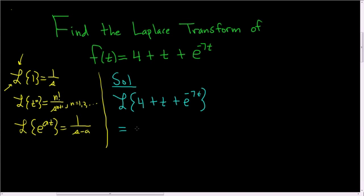And the Laplace transform is linear. So we can write this as 4 times the Laplace of 1. That means we can pull numbers out. We can't pull t's out, but we can take numbers out.